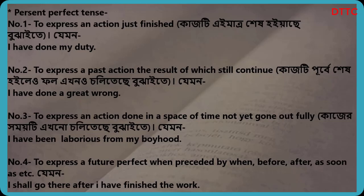Number 3 — to express an action done in a space of time not yet gone out fully. For example: I have been laborious from my boyhood. Number 4 — to express a future perfect, when preceded by when, before, after, as soon as, etc. For example: I shall go there after I have finished the work.